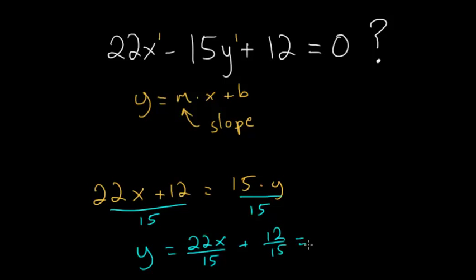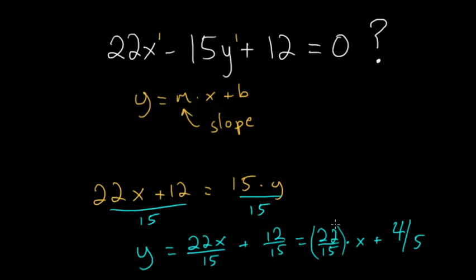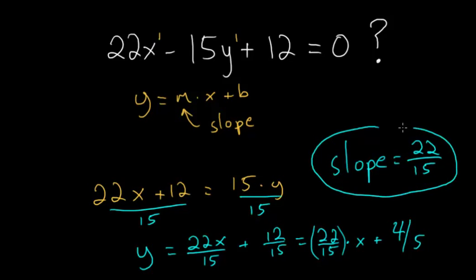We can simplify this. We still have 22 over 15 times x plus 12 over 15. These have a common factor of 3, so we can rewrite 12 over 15 as 4 fifths. The slope is just the coefficient on x, so for our line the slope is 22 fifteenths.